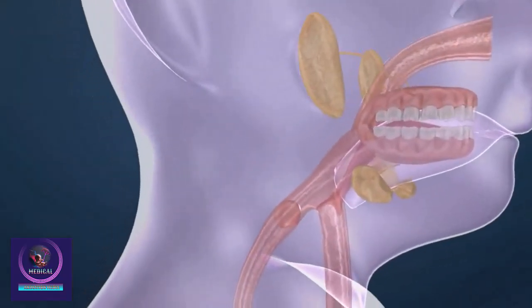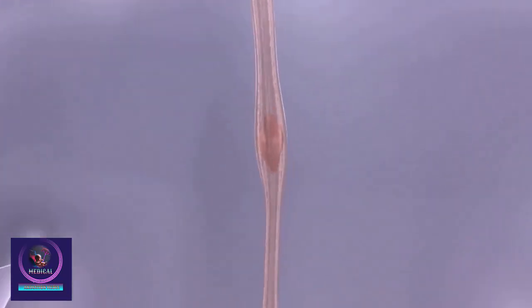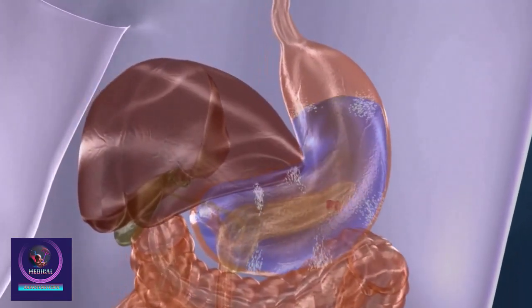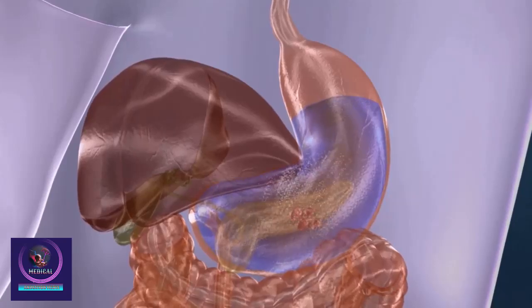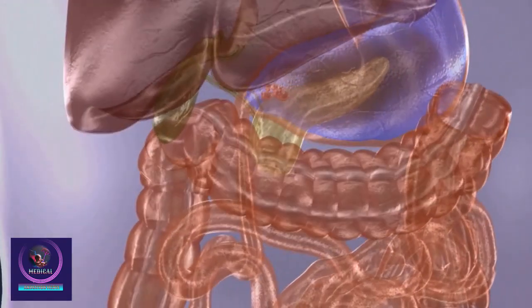When we eat, food is broken down into many nutrients. One of these nutrients is a carbohydrate called glucose, shown here as a bread icon, which is the main source of energy for the cells inside your body.